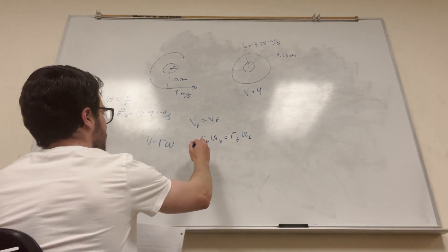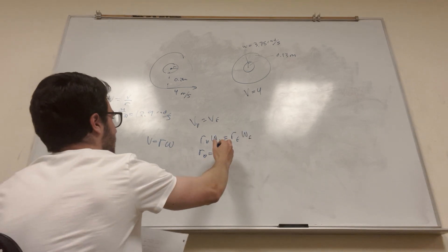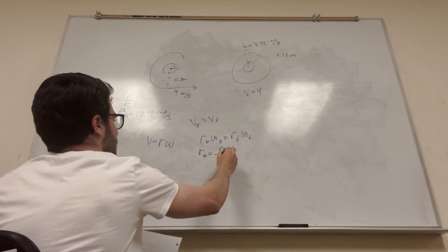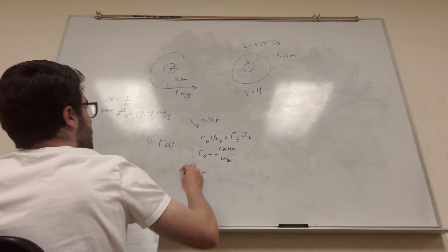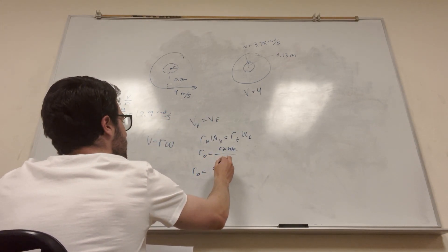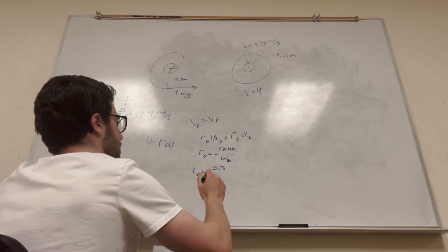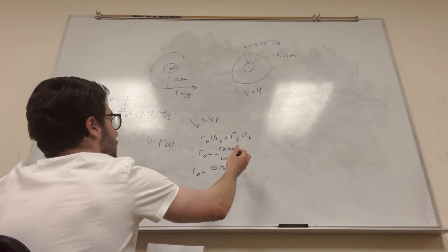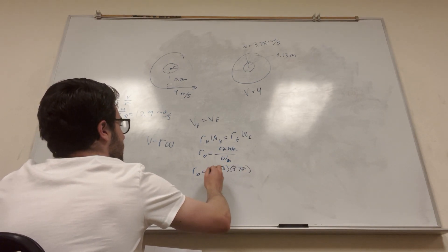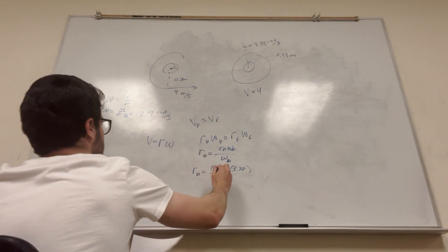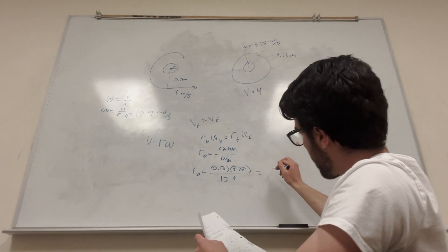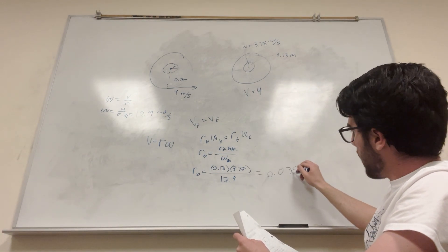Okay, so radius of the back is what we're trying to find. So if you divide it by that, you're going to get radius front, angular velocity front, angular velocity of the back. Makes sense. Okay, so plugging in your numbers, the front radius, 0.13, multiplied by its tangential velocity, 3.78. And then divide that by the one we just found, which is 12.9. You get 0.038 meters.